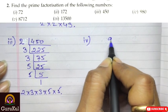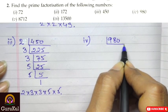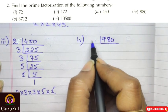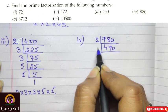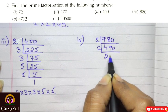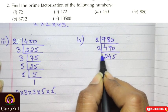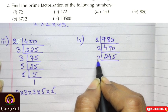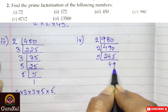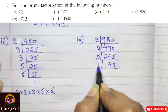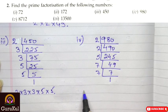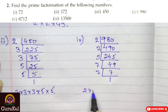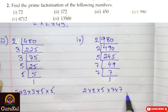Number 4 is 980. 980 ÷ 2 = 490, ÷ 2 = 245, ÷ 5 = 49. Then 49 ÷ 7 = 7, ÷ 7 = 1. So the prime factorization of 980 is 2 × 2 × 5 × 7 × 7.